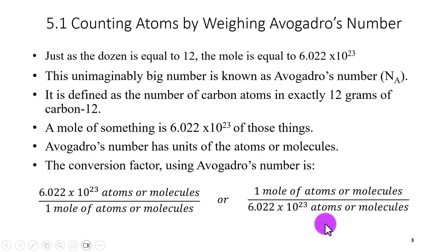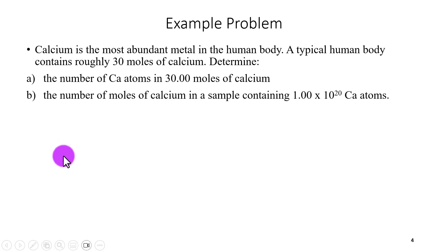So let's take a look at an example problem. Calcium is the most abundant metal in the human body. A typical human body contains roughly 30 moles of calcium. So let's determine the number of calcium atoms in 30 moles of calcium and the number of moles of calcium that are contained in a sample that has 1.00 times 10 to the 20 calcium atoms. Now I'm going to do A for you and then I will give you a chance to work on B on your own.